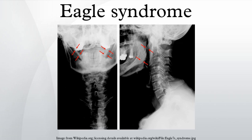Signs and symptoms: possible symptoms include otalgia, dysphagia, foreign body sensation in the throat, odynophagia, pain on chewing, pain when turning the head, intense pain when the stylohyoid process is palpated in the wall of the pharynx, and pain along the distribution of the carotid artery.